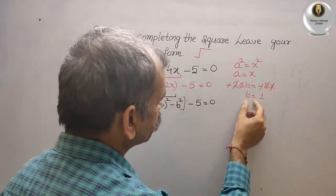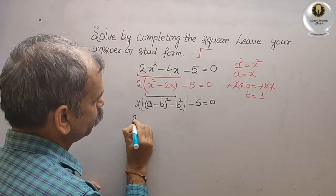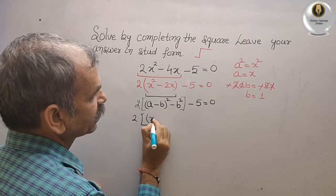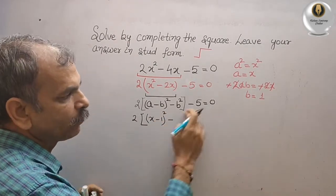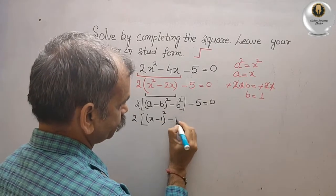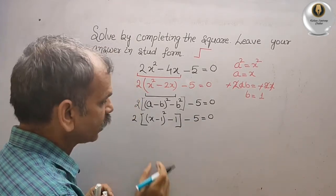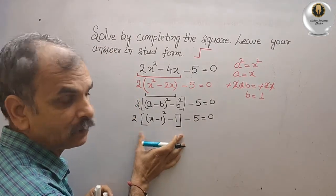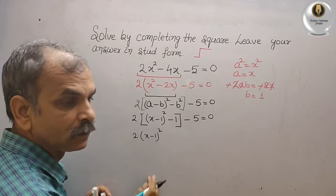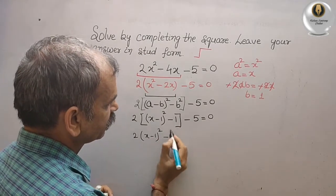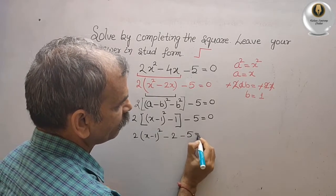Now we will substitute these two values. We will get 2 times (x minus 1) whole square, minus 1 squared — which is 1 — minus 5, that gives you 0. Opening the bracket, we get 2(x minus 1) whole square, minus 2 into 1 is 2, minus 5, that gives you 0.